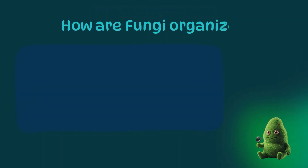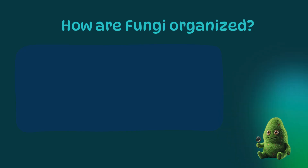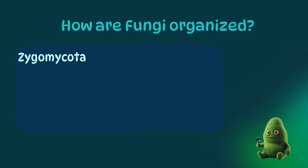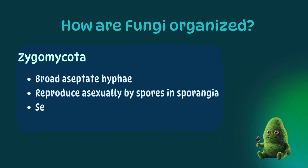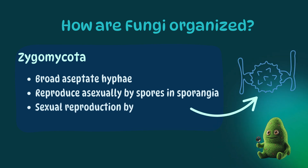So, how are fungi organized? Taxonomy in mycology is currently going through a lot of revisions, so stay tuned if you're interested in this topic. Classically, they are divided into four phyla, starting with Zygomycota. This group is the only group with aseptate hyphae. The hyphae are also very broad, with some structures visible to the naked eye. They reproduce asexually through sporangia and sexually via zygospores.